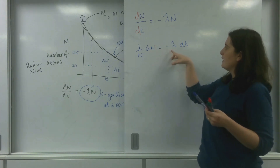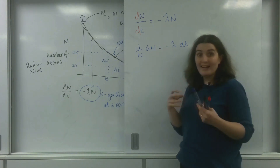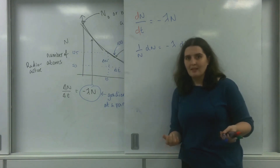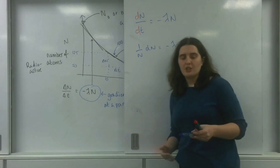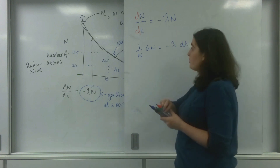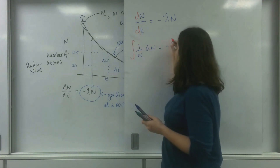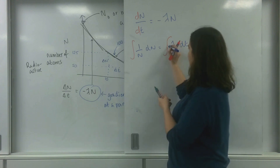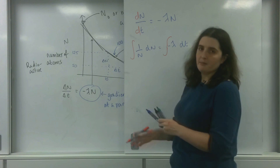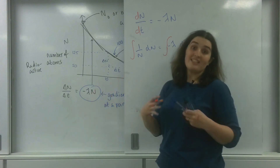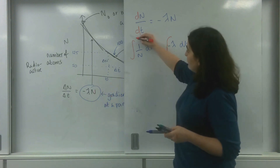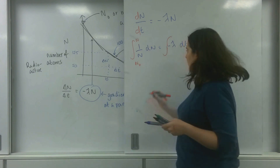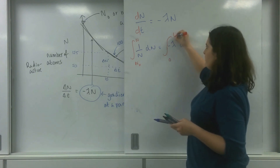So I have the gradient of the line and I'm trying to find the equation of the line. To undo differentiation I have to integrate, so I'm going to integrate these values. I'm not going to use an indefinite integral — I'm going to use a definite integral, integrating between N and the starting point N naught, and from time 0 to time t.